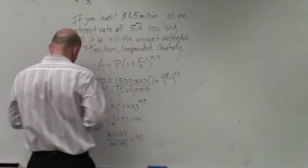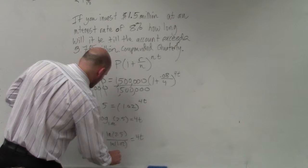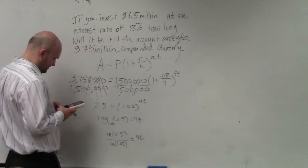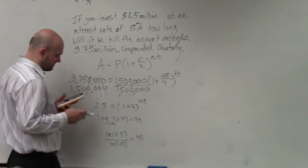So I'll just do ln of 2.5 divided by the ln of 1.02. And I get 46.27 rounded. And then I'll just divide that by 4. I get 11.57.